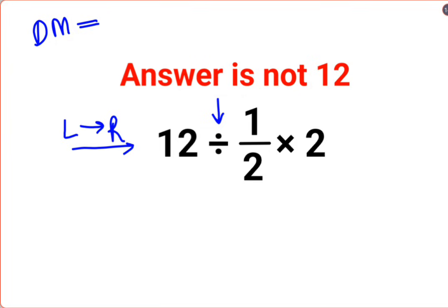So first we will do 12 divided by 1/2. Whenever there is a fraction involved, you will follow the acronym of KCF. K stands for keeping the first number as it is. C stands for changing the division sign to multiplication.